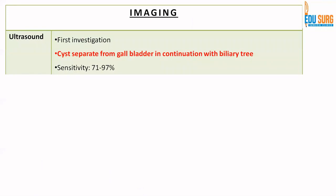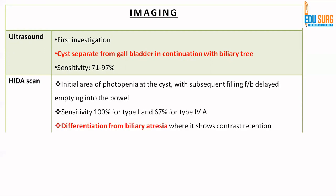For imaging, when patients present with abdominal pain or obstructive jaundice, ultrasound is the first investigation. Ultrasound will show a cystic lesion separate from the gallbladder in continuation with the biliary tree. The sensitivity of ultrasound to diagnose choledocal cyst is 71 to 97%. HIDA scan is not routinely used in adults, but is more commonly used in neonates and children where it helps differentiate from biliary atresia, showing initial photopenia in the cyst followed by subsequent filling and then delayed emptying into the bowel.